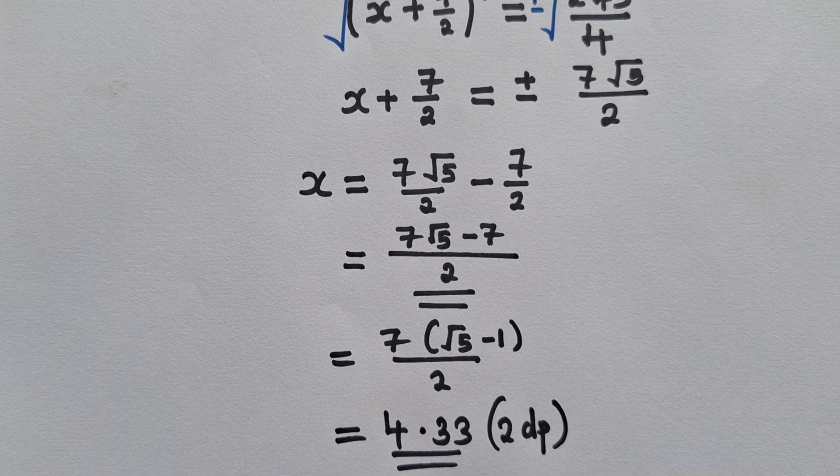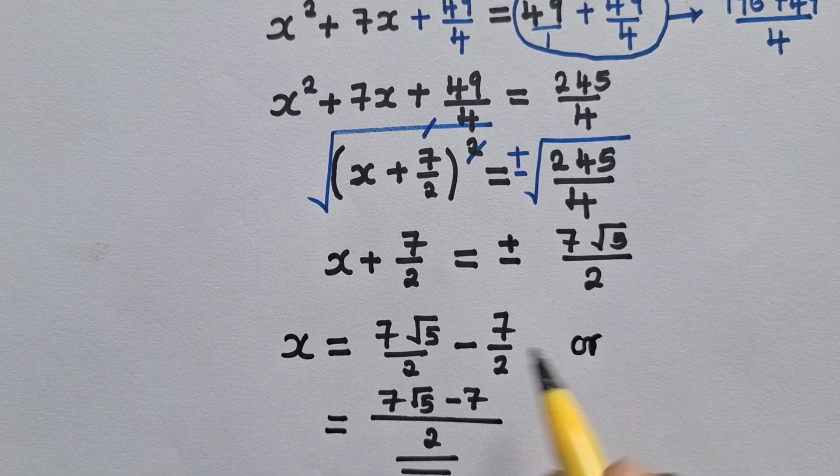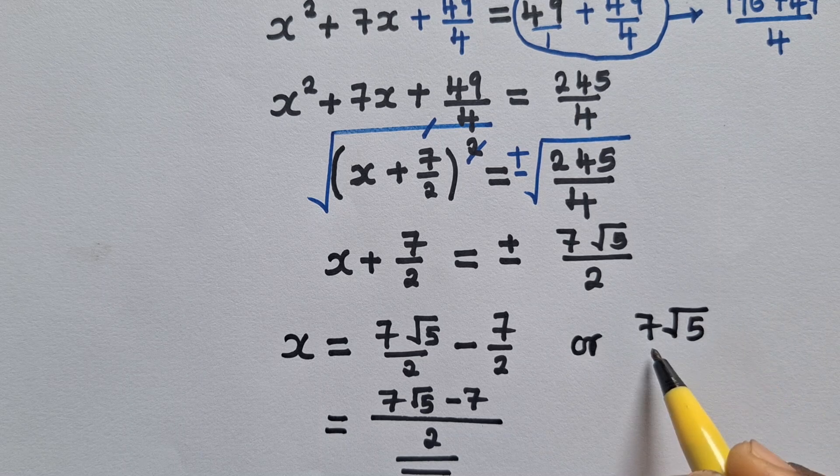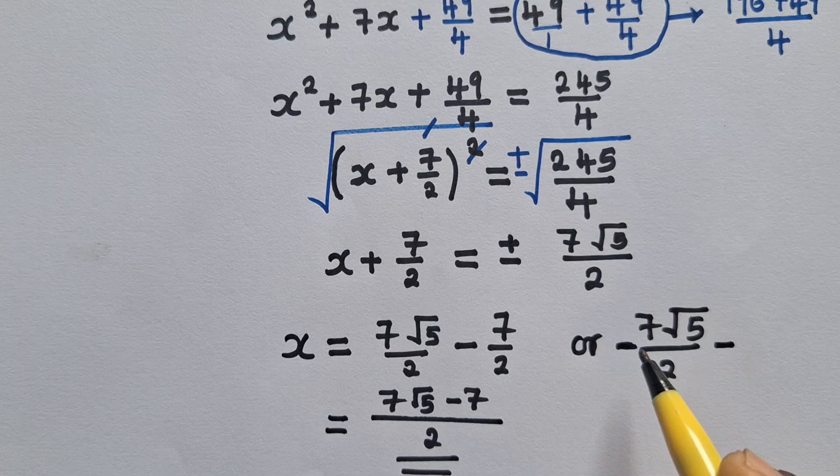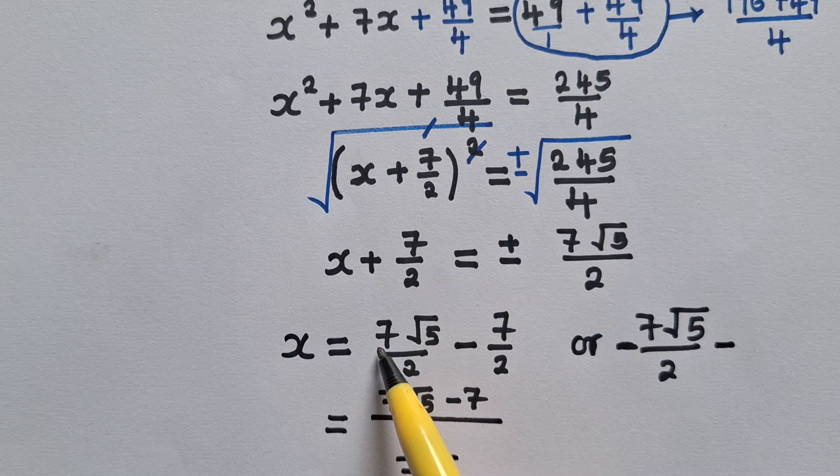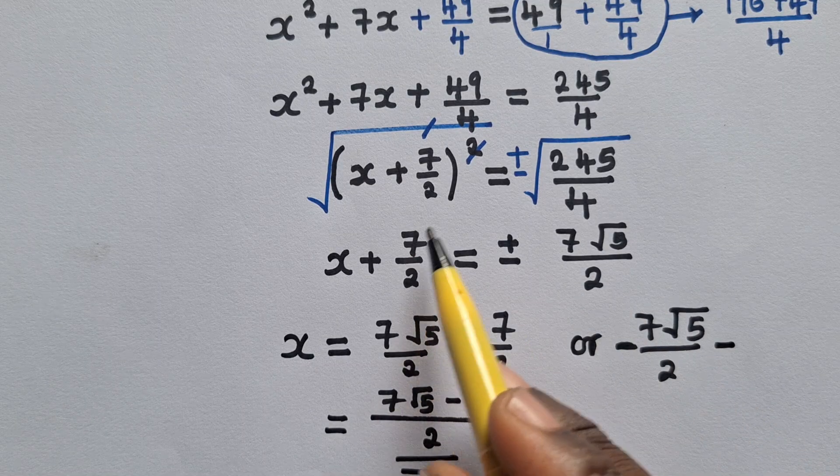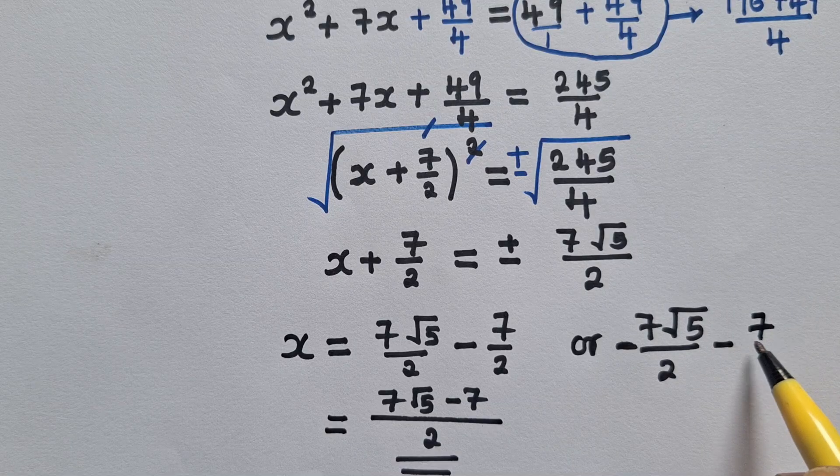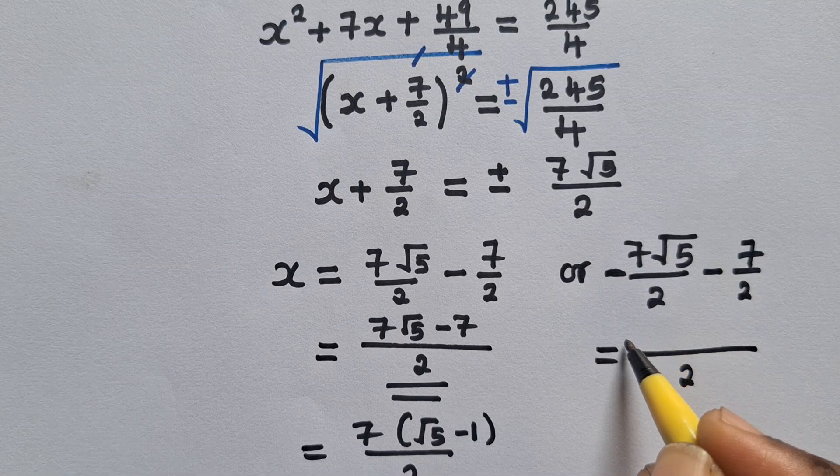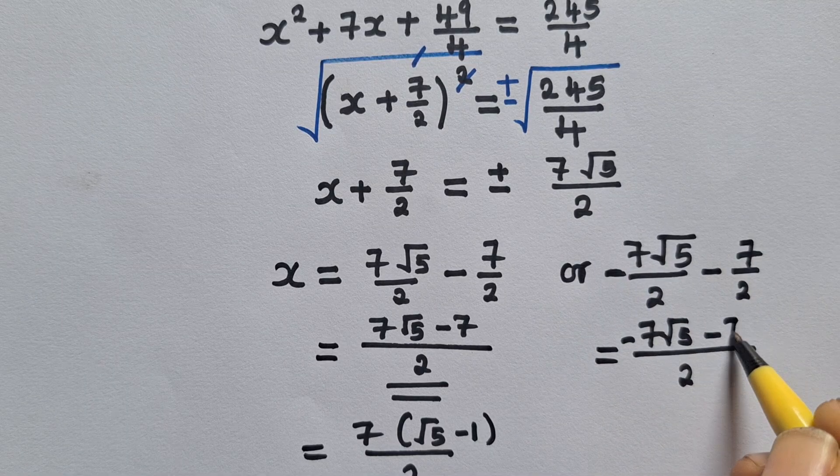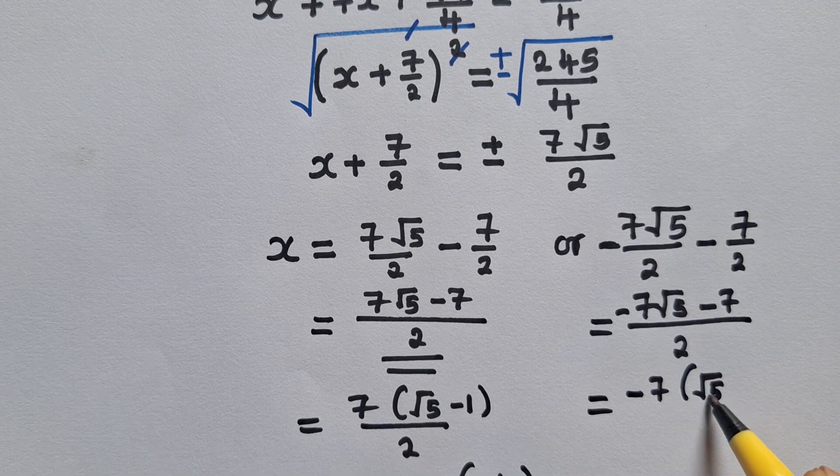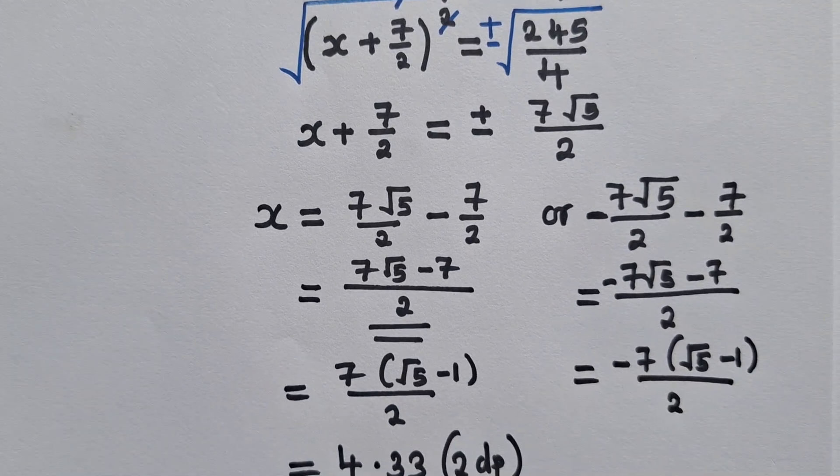We find another solution. So for the other solution, from this point you say, 7√5/2 minus, actually it will be negative here because this one was positive. Remember, here we've put positive or negative. So since here it was positive, the next one will be negative. And this guy will come this side: it will be minus 7/2. And from here we've got (-7√5 - 7)/2. And also, if you want to factor out here, you can leave your answer like this.